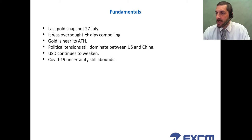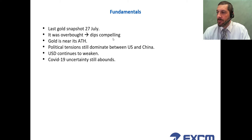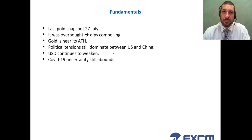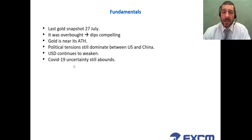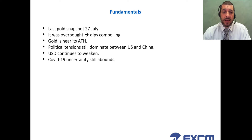The last gold snapshot was on the 27th of July. In that snapshot we suggested that gold was overbought and that dips would be compelling. Gold is still near its all-time high. Political tensions still dominate between the US and China, the US dollar continues to weaken, and COVID-19 uncertainty still abounds — referring to economic uncertainty and uncertainty on corporate earnings.